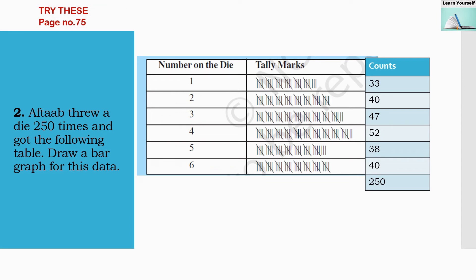Try these sums from chapter number 3, page number 75. The second question is: Aftab threw a die 250 times and got the following table. In the textbook we have this table, but when writing in your notebook you have to make a table with counts derived from tally marks. One group of tally marks gives us five counts.